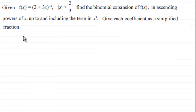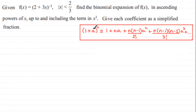First of all, you need to be familiar with the binomial expansion formula when the power is not a positive integer. So: (1 + a)^n is identical to 1 + na + [n(n-1)/2!]a² + [n(n-1)(n-2)/3!]a³ + and so on.